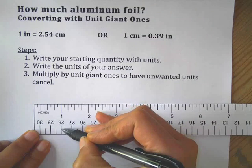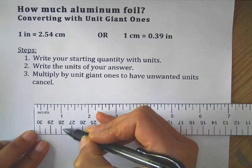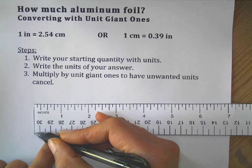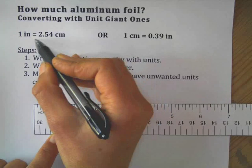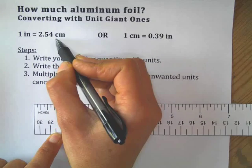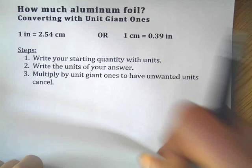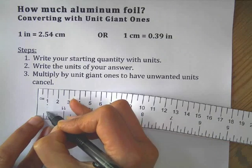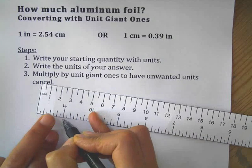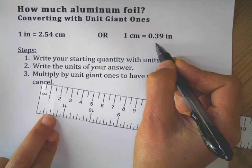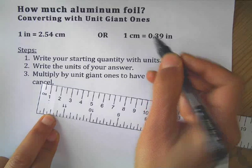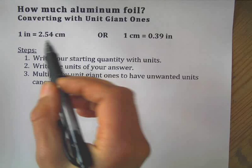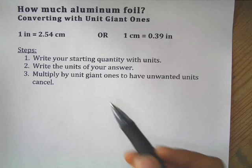So in an inch, how many centimeters are there? There's about one, two and a half. So in one inch, there's about 2.54 centimeters. Or conversely, you can say in one centimeter, how much of an inch is that? So it's about 0.39 inches. So I'm going to show you that I could use either one of these as a unit giant one.